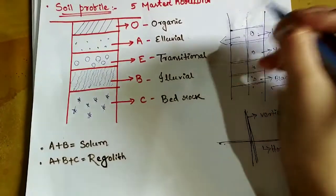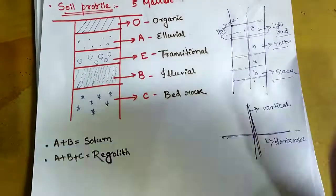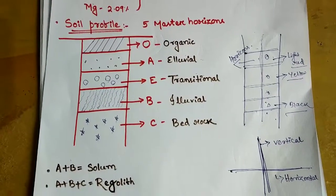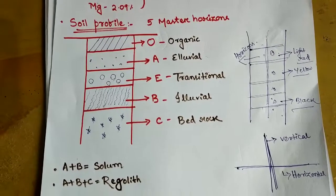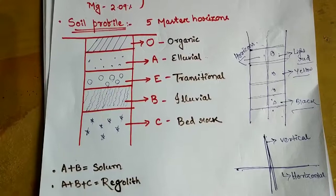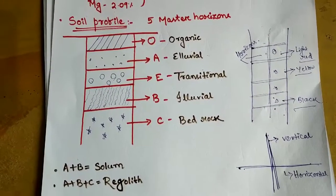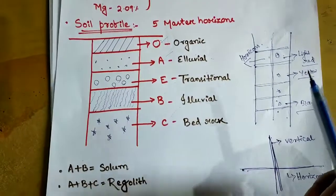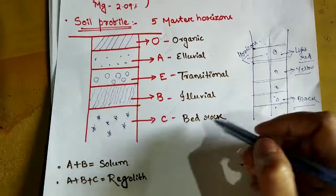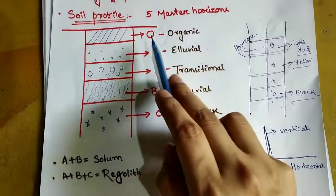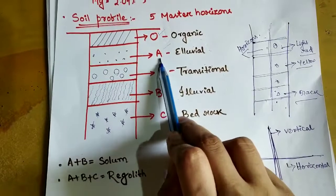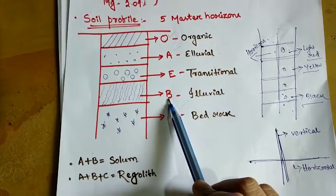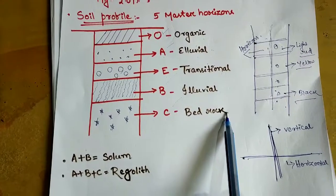There are 5 master horizons in every soil profile: O, A, E, B, and C. O stands for organic horizon. A stands for eluvial horizon. E stands for transitional horizon. B stands for illuvial horizon. C stands for bedrock. Note: A (eluvial) starts with E, and B (illuvial) starts with I — so don't confuse these two terms.